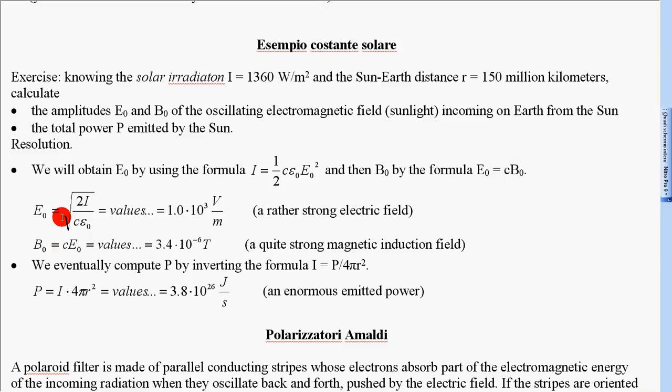So E₀ = √(2I/cε₀). The result is 1.0 × 10³ V/m, a rather strong electric field.